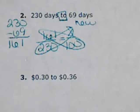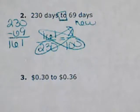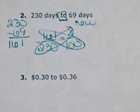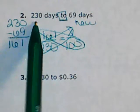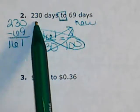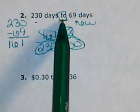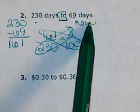Number 2: 230 days to 69 days. Find the difference between the old and the new. 230 minus 69 is 161. If you go to the new, then you go from the original. Therefore, 230 is the old or the original, and 69 is the new number of days.